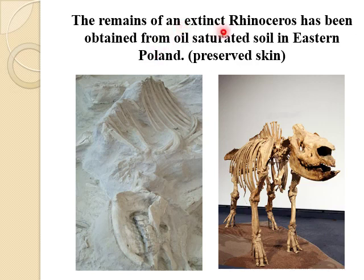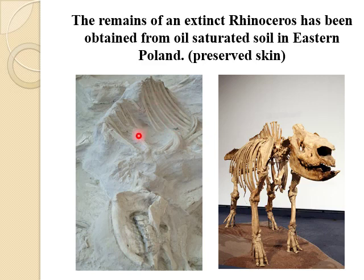The remains of an extinct rhinoceros have been obtained from oil-saturated soil in eastern Poland, in which the skin of that organism was preserved. Here in this diagram you can easily observe the structures of that preserved animal and the fossils of that organism.